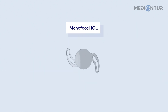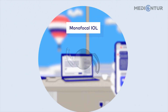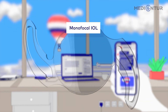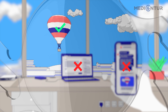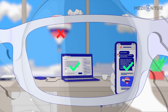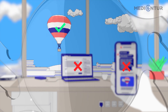The majority of implanted IOLs have monofocal optics. These enable sharp vision at one distance only, usually the far. Patients with monofocal lenses have to wear spectacles to perform certain tasks at near and intermediate distances, such as reading or checking their phones.